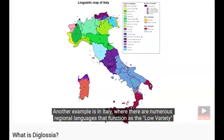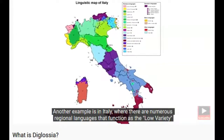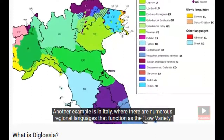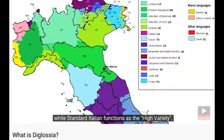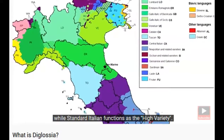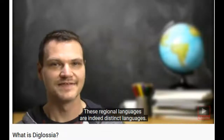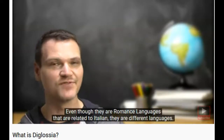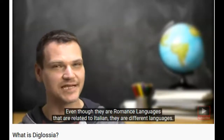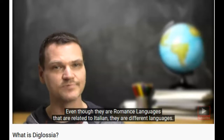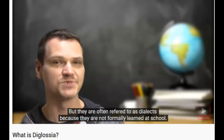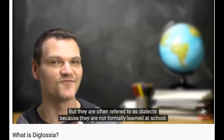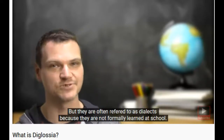Another example is in Italy, where there are numerous regional languages that function as the low variety while standard Italian functions as the high variety. These regional languages are indeed distinct languages — even though they are Romance languages related to Italian, they are different languages — but they're often referred to as dialects because they are not formally learned at school.